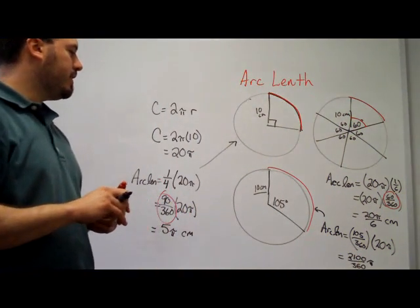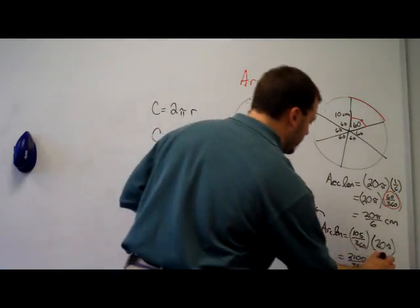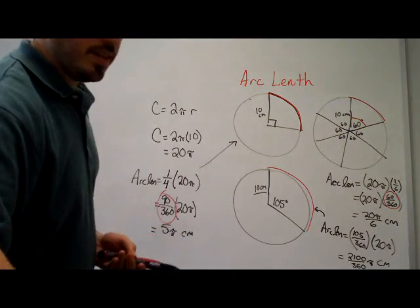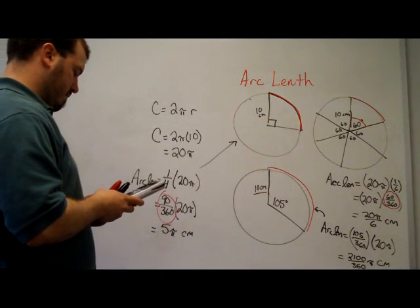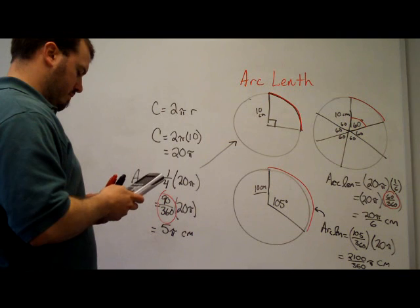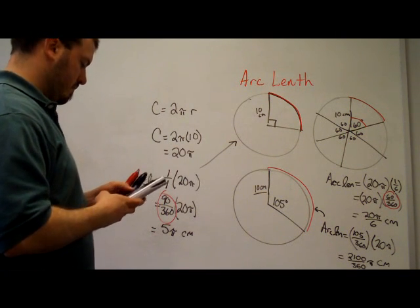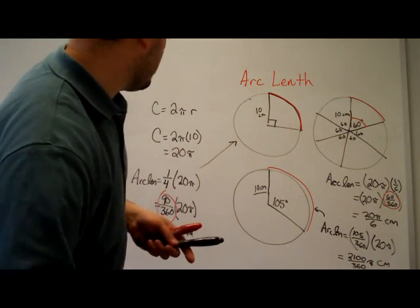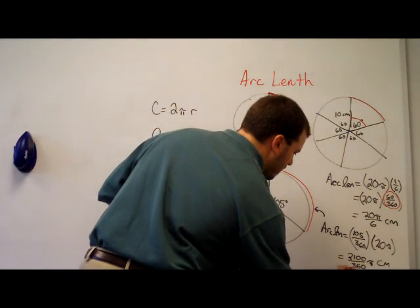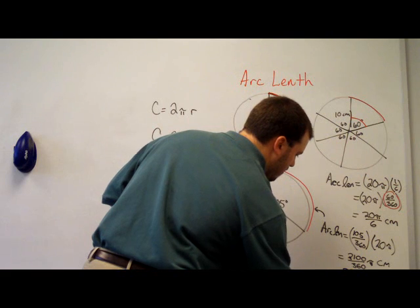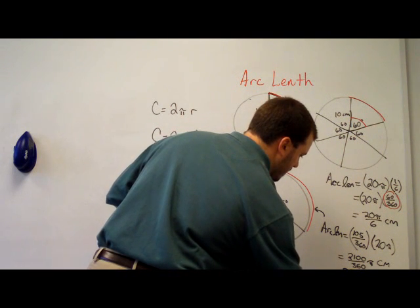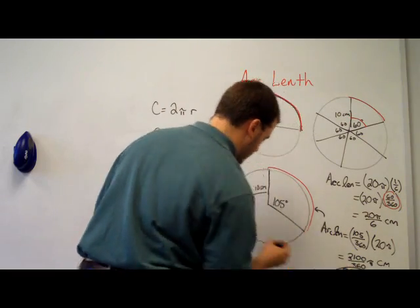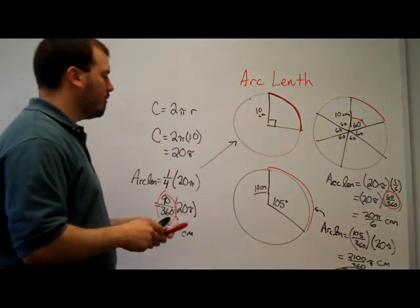210 over 360 times pi. Again, this is in centimeters. Use the calculator to simplify that a little bit. So I have 35 over 6 pi centimeters.